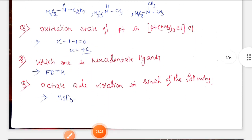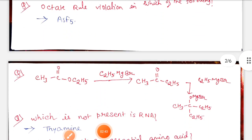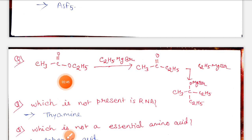Here the platinum oxidation state is plus 2. Which one is a hexadentate ligand? That is EDTA. Next, octet rule violation is in which of the complexes? AsF5.